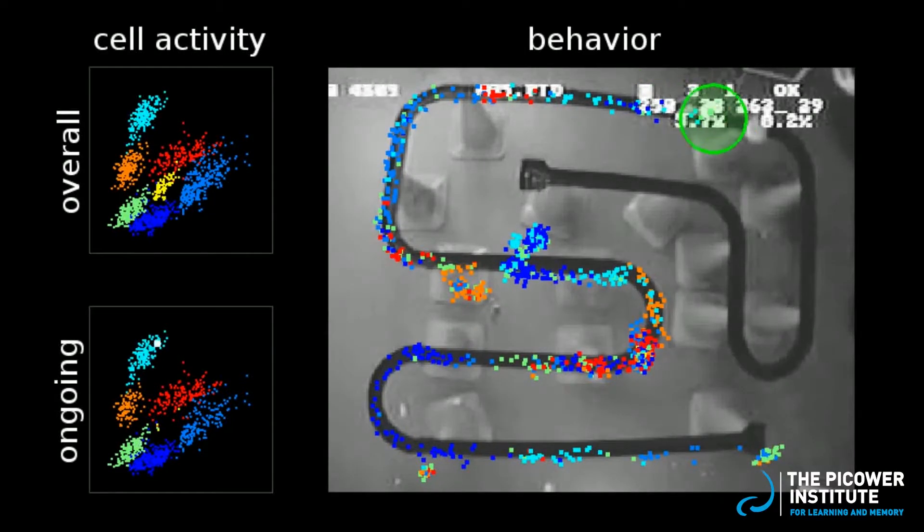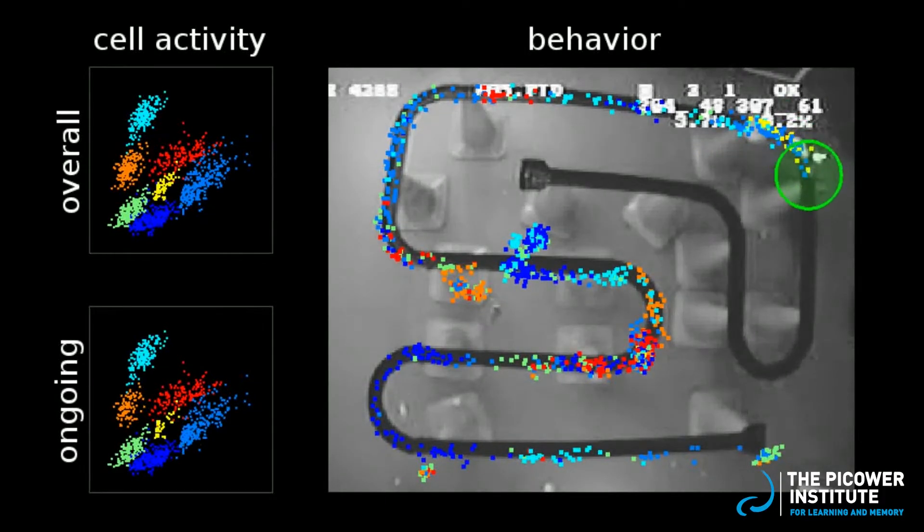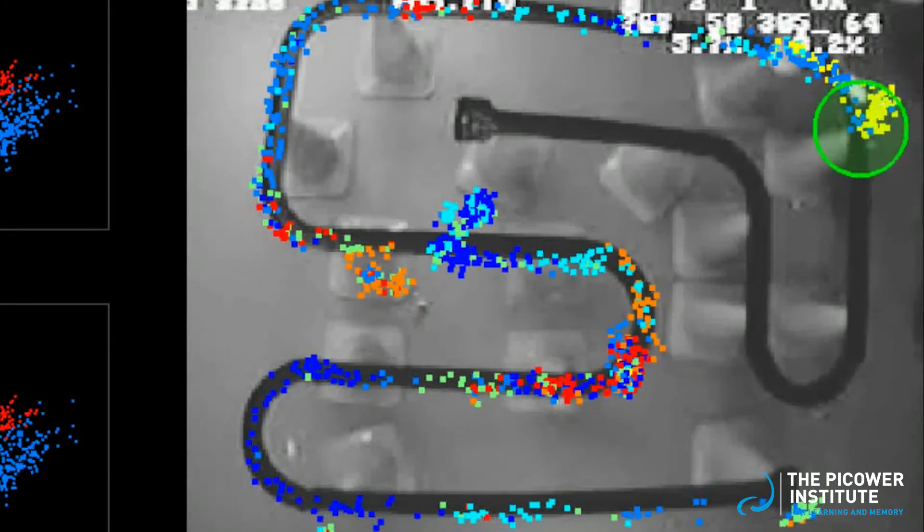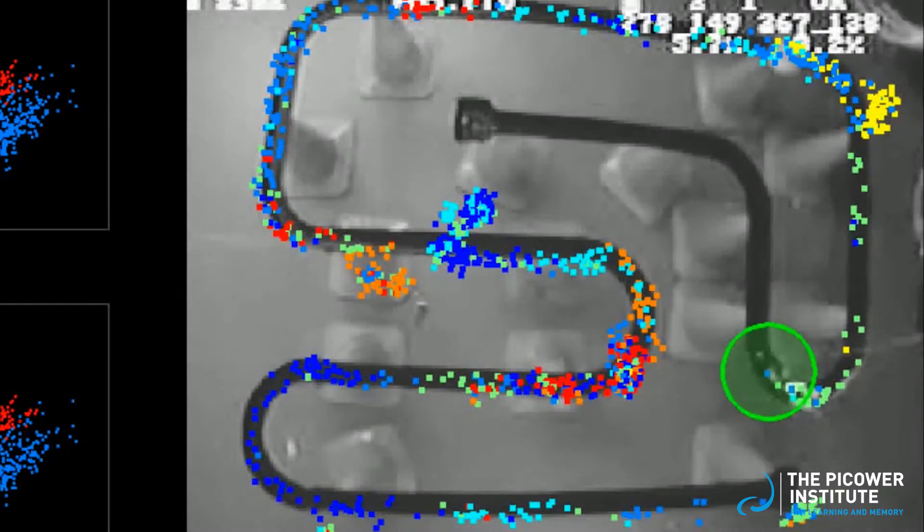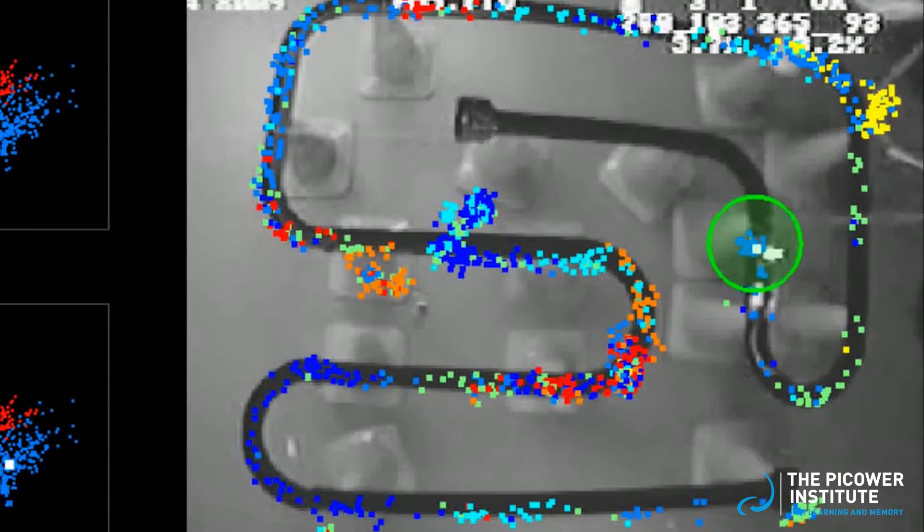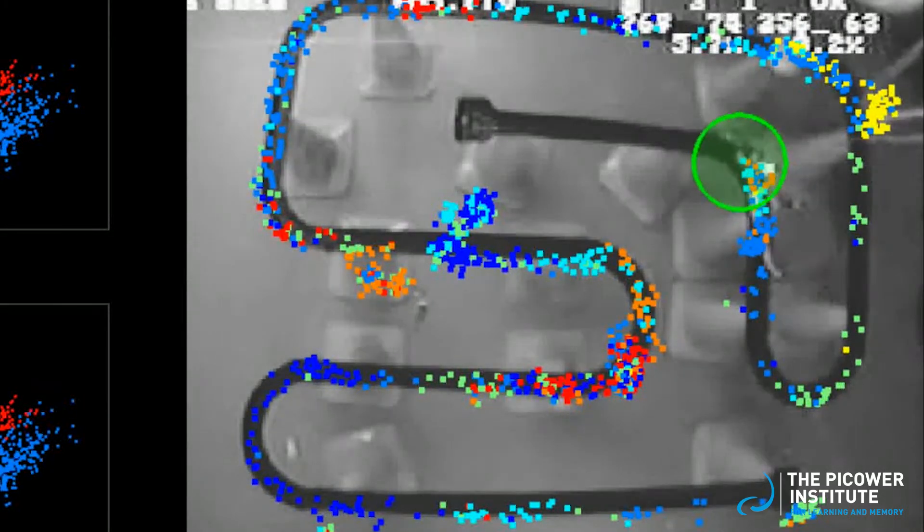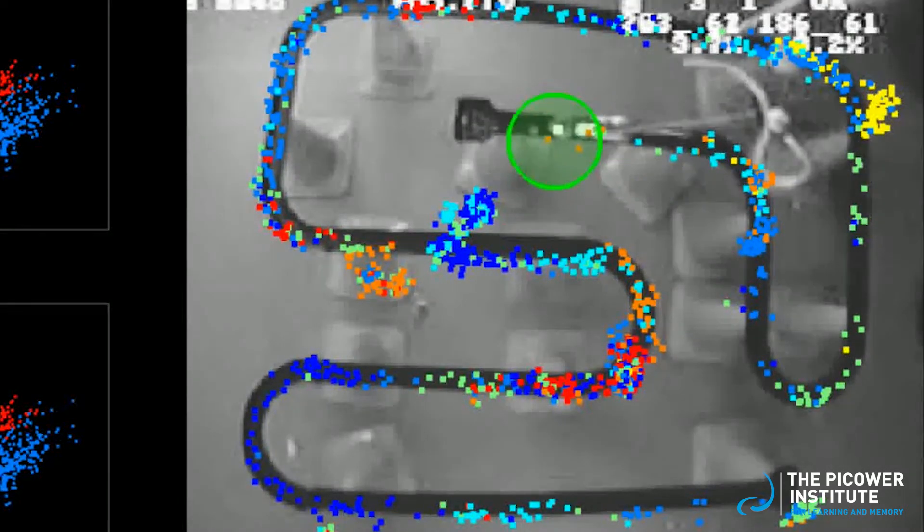By the end, you can see how the place cells are distributed across the track. Some cells, like the yellow cell in the top right corner, are very spatially precise and fire only when the rat is in that location. Other cells, like the orange cell, fire in clusters at a few locations on the track. The blue cells are less spatially precise, but still don't fire at every location.